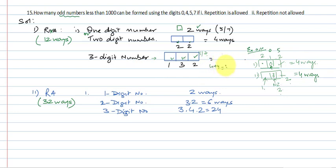4 plus 4, that is equal to 8 ways. So total ways of creating an odd number less than 1000 is 2 plus 4 plus 8, and that gives us 14. So this answer is 14.